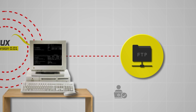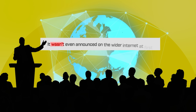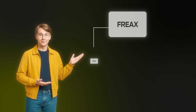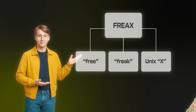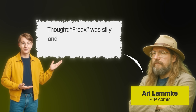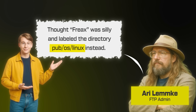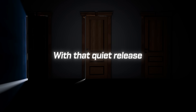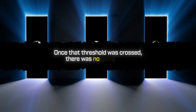He uploaded the source code to an FTP server for those early testers. It wasn't even announced on the wider internet at first — Linus just told the dozen or so people who'd contacted him that they could now download Linux 0.01. The name Linux itself was an accident of fate. Linus had whimsically called his project Freaks, a mashup of Free and the requisite Unix 'x.' But the FTP admin, Ari Lemke, thought Freaks was silly and labeled the directory pub/os/Linux instead. The name stuck, much to Linus's later surprise and mild embarrassment. The code was rough but it worked. With that quiet release, he opened the door for a world of co-developers to shape what came next. Once that threshold was crossed, there was no going back.